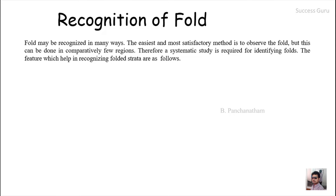Folds can be recognized in many ways. The easiest and most satisfactory method is to observe the fold directly, but this can be done in comparatively few regions due to extensive vegetation and soil cover with very few exposures available. Therefore, a systematic study is required for identifying folds. The features which help in recognition of fold are as follows.